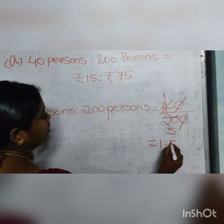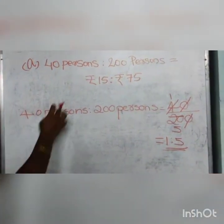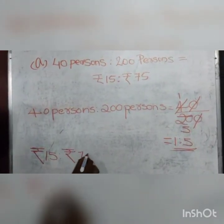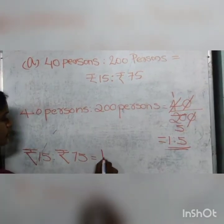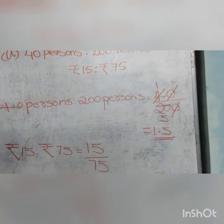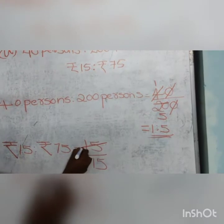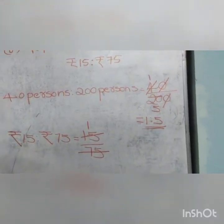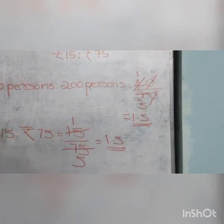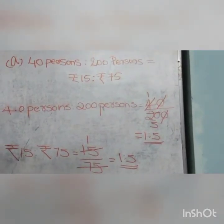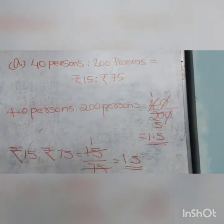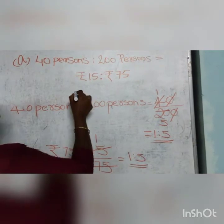Next, we find the ratio of Rs.15 and Rs.75. Write Rs.15 is to Rs.75 in fractional form as 15 by 75. Both 15 and 75 are divisible by 15, so we divide both by 15. Since 1 times 15 is 15, we write 1 here; and since 5 fifteens are 75, we write 5 here. Now the ratio becomes 1 is to 5. We get both ratios are equal to 1 is to 5. Hence, the given statement is true: 40% is to 200% is equal to Rs.15 is to Rs.75. We can write this statement is true.